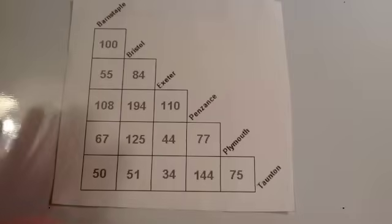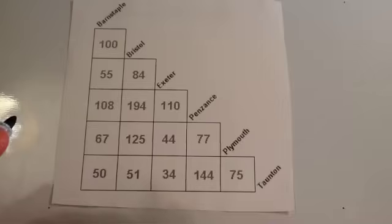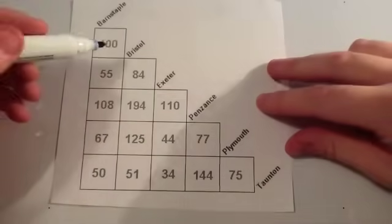So let's have a look at two different questions. The first question says, work out the distance from Bristol to Taunton. So if you want to do that, what you've got to do is find where Bristol and Taunton are in the diagram.